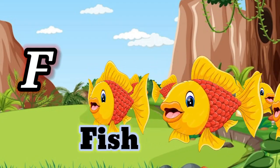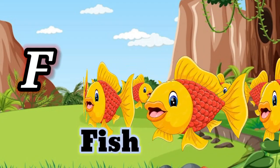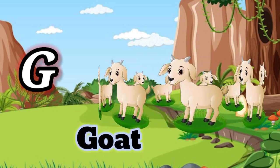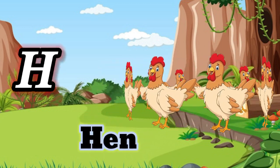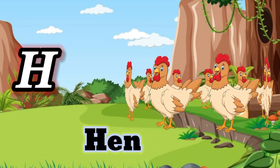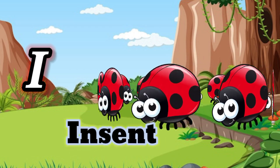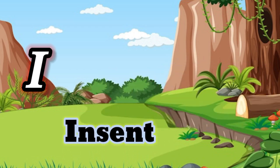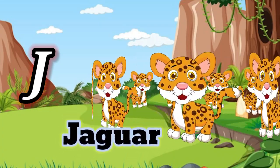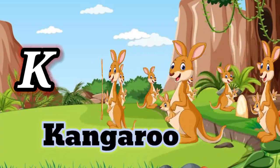F is for Fish. G is for Goat. H is for Hen. I is for Insect. J is for Jackiva. K is for Kangaroo.